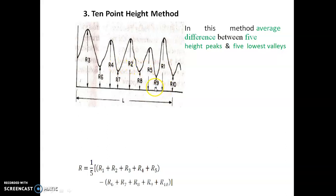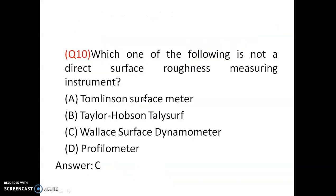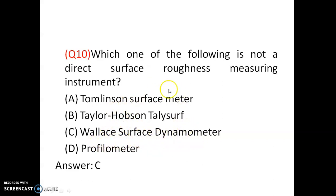So Ra, Rq, and Rz values can be determined — that is called surface roughness. For surface roughness measurement, the instruments used include the Tomlinson surface meter and the Taylor Hobson Tallysurf profilometer. The wireless surface dynamometer is not a surface roughness measuring instrument.